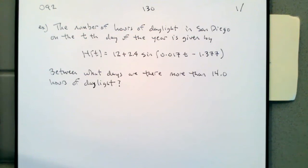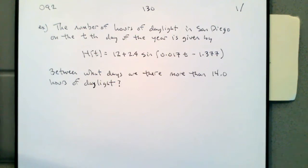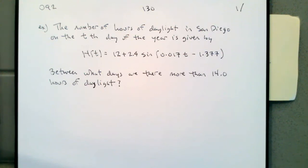Here's our problem for the day. We have the model for the number of hours of daylight in San Diego. Last time we did a daylight problem it was in Grand Rapids, Michigan — it's getting cold there, so I moved the problem to a warmer climate. The number of hours of daylight in San Diego on day T of the year is given by: 12 plus 2.4 sine of (0.017T minus 1.377).